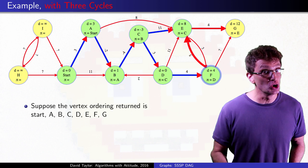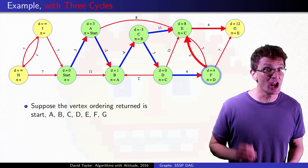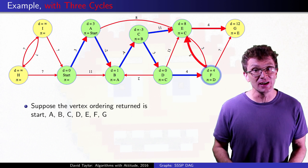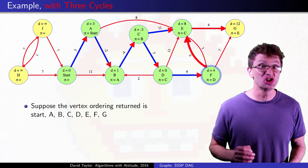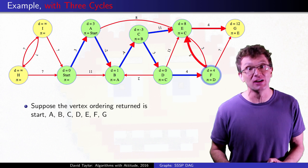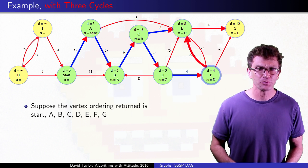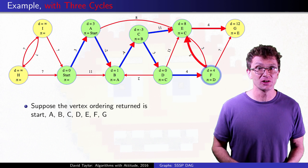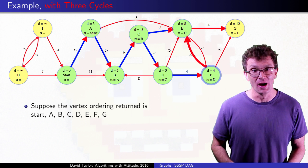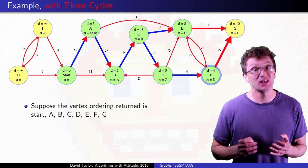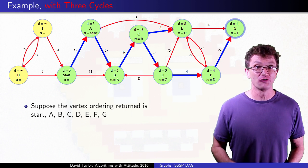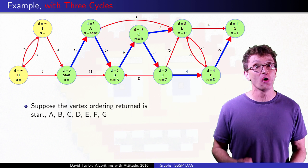But if its weight were 2 instead of 5, it would change the distance estimate to E when E was already supposed to be finished, and E's edge to G would need to be relaxed again to find the shortest path to G. Without that extra relaxation, the algorithm would fail. With weight 5, everything works because we happened to get lucky in our vertex order from the depth first search, even though there were cycles.